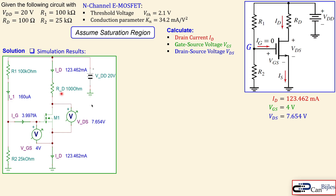We have R1, R2, and VDD in the circuit. The simulation shows IS is exactly the same as ID, which confirms our assumption. We can see VDS, the gate-to-source voltage, and the drain current — all matching our calculations exactly. The gate current is almost 4 femtoamps, very small, so we can assume it is zero. The current in the R1-R2 branch is 160 microamps, which can be verified as 20 V divided by 125 kΩ.